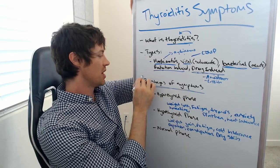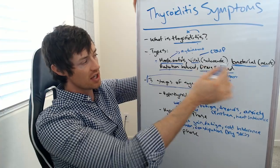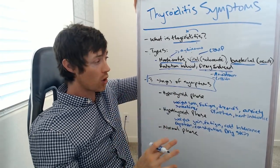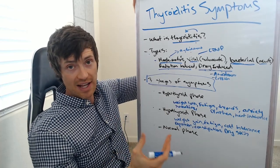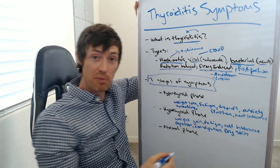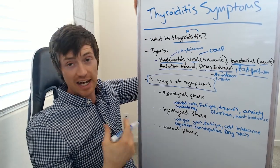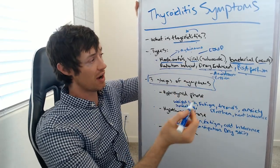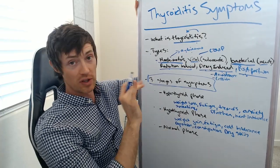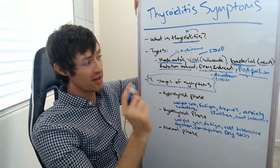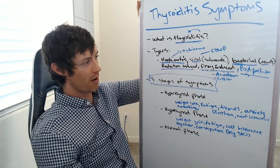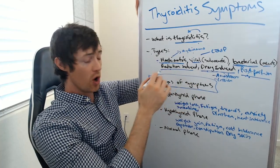Let's talk about the stages and symptoms of thyroiditis more generally. Each of these conditions — Hashimoto's, viral, radiation, bacterial, drug-induced — has a different course, meaning different phases the patient will go through. I also forgot to mention postpartum thyroiditis: just having a baby can cause the thyroid gland to become inflamed. Postpartum thyroiditis is actually very common, and many believe it's really an extension of Hashimoto's. Postpartum thyroiditis only lasts for the postpartum period, though enough cases do turn into Hashimoto's.